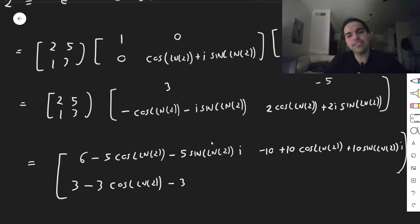And then 3 minus 3 cosine of ln of 2, minus 3 sine of ln of 2, i, and then minus 5, plus 6 cosine of ln of 2, plus 6 sine of ln of 2, times i.